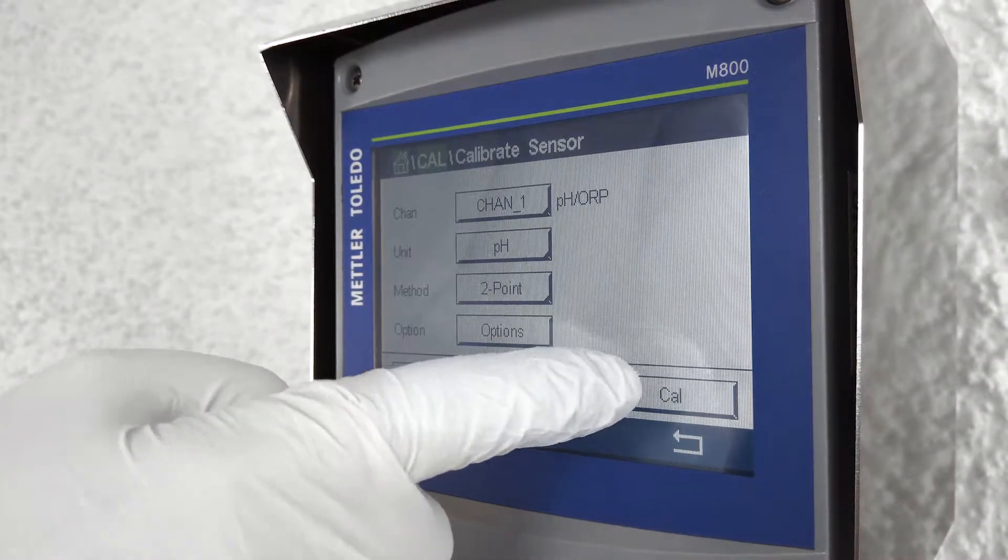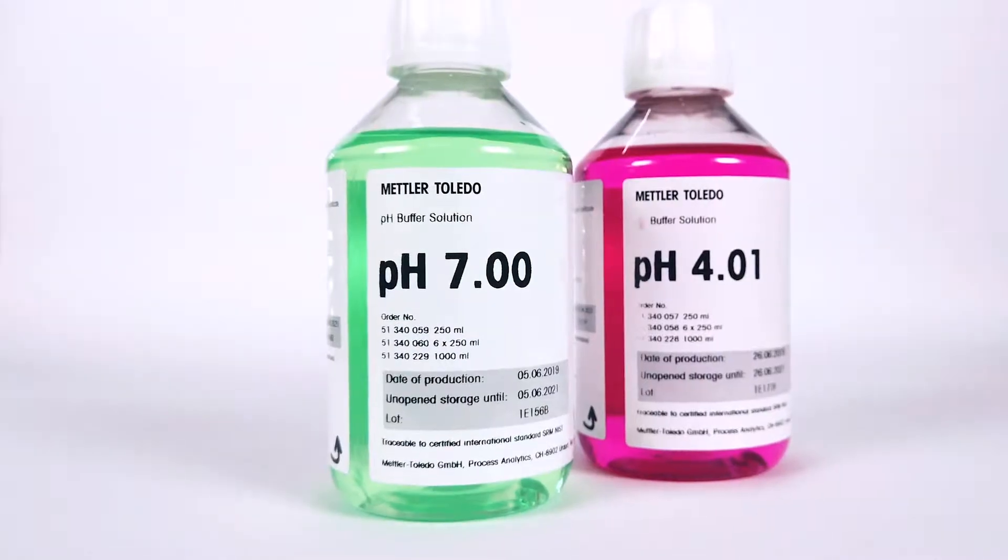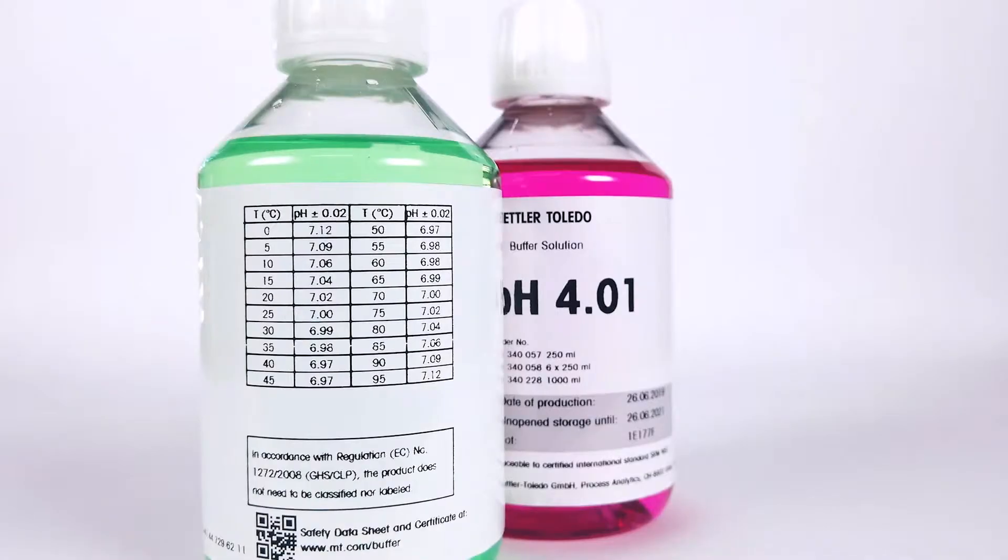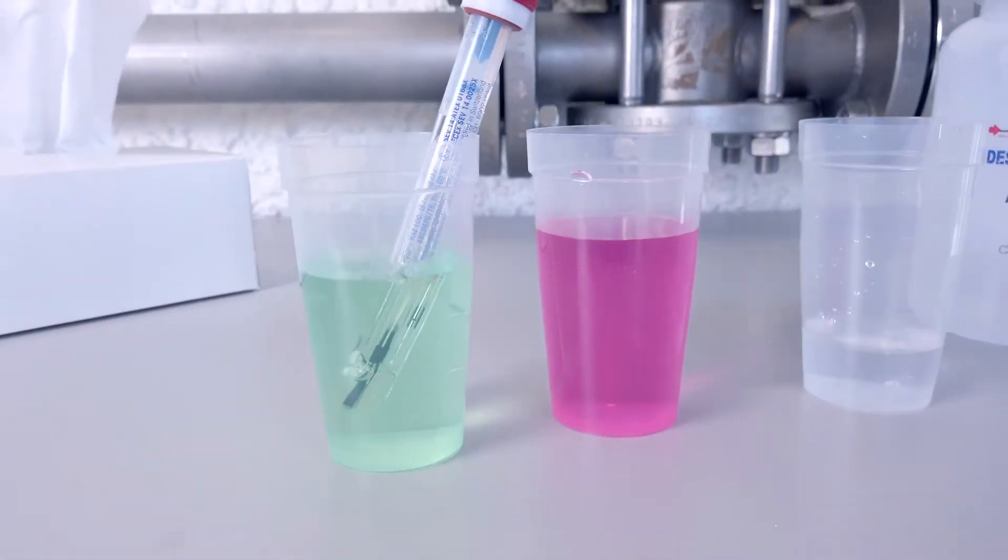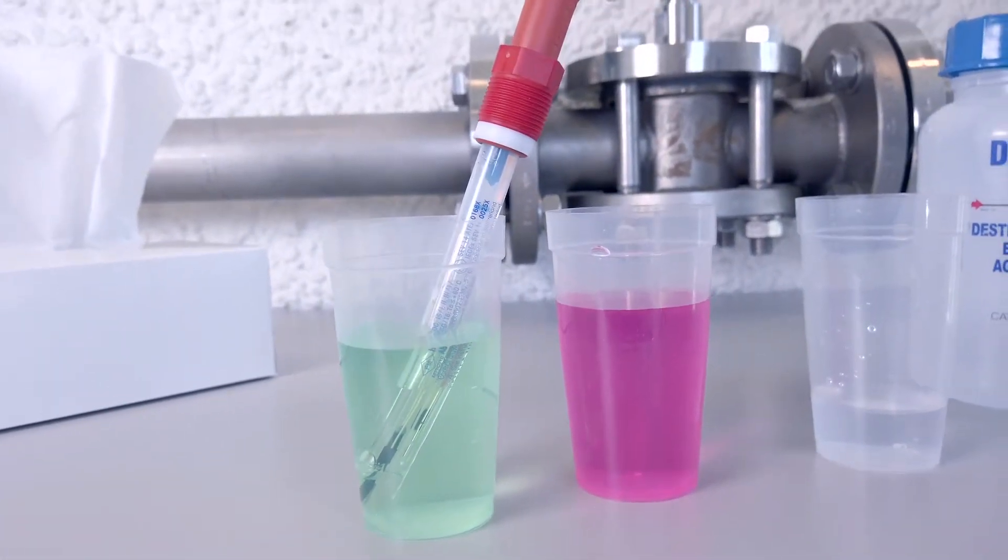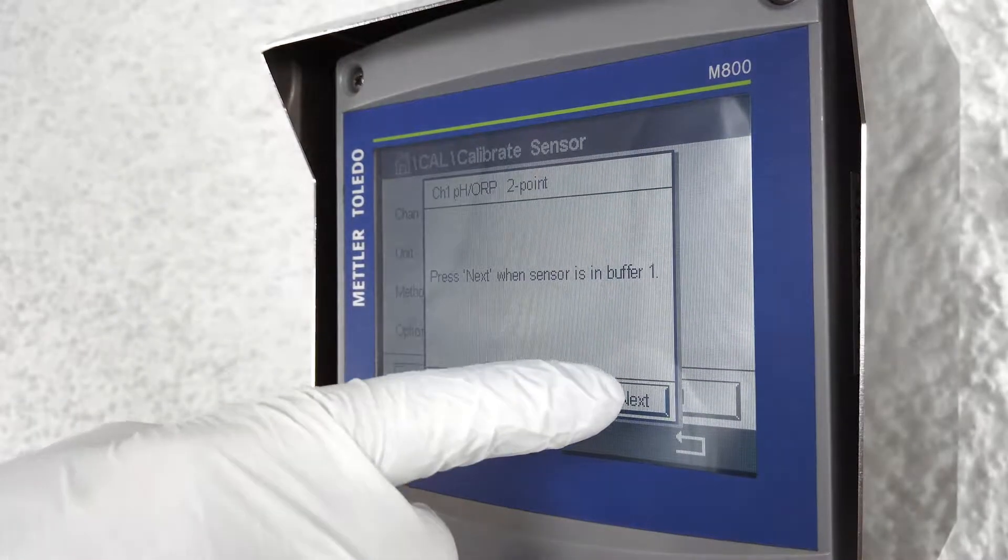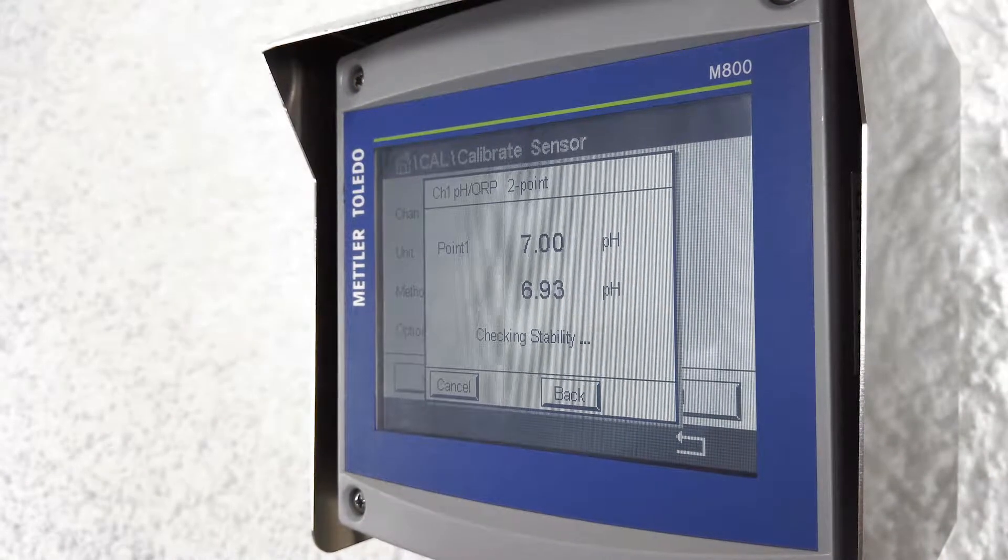The transmitter display indicates that the sensor should be put in the first buffer. Mettler Toledo transmitters can automatically detect buffers with a preset buffer table. You can either go to pH 7 or pH 4 first - the transmitter will automatically detect which one it is. In this case we're using pH 7 buffer first. Press next and you will see it's detected pH 7 buffer and it's calibrating the first point.